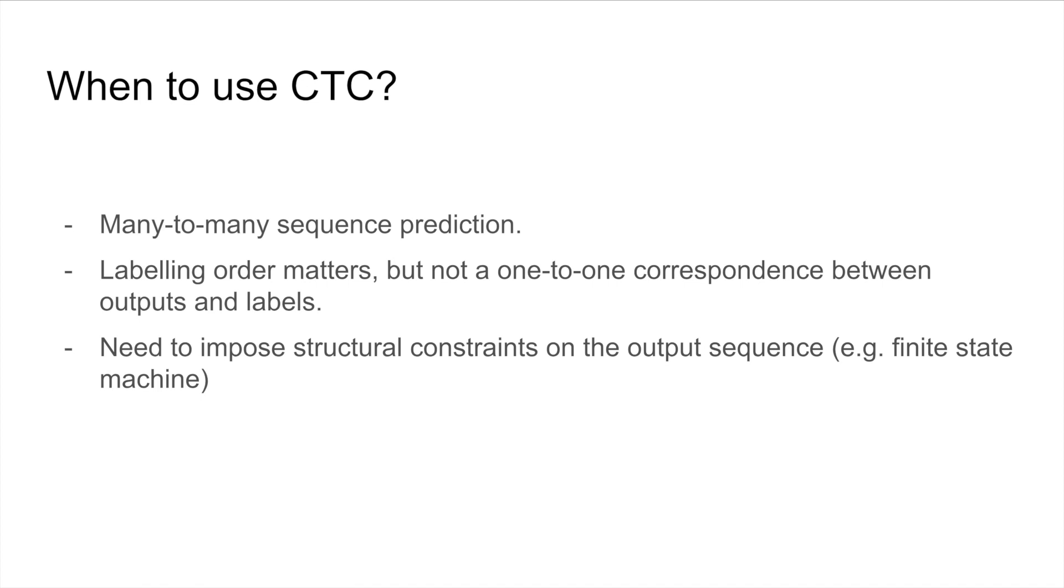So, when are we going to use CTC? Specifically, we are going to consider a set of many-to-many sequence prediction problems. In these problems, we have a series of inputs, and for each input we are going to produce an output, and each one of these outputs is going to be based on all of the previous inputs before that output. And in these problems, generally, the labeling order matters, but there's not necessarily a one-to-one correspondence between outputs and labels.